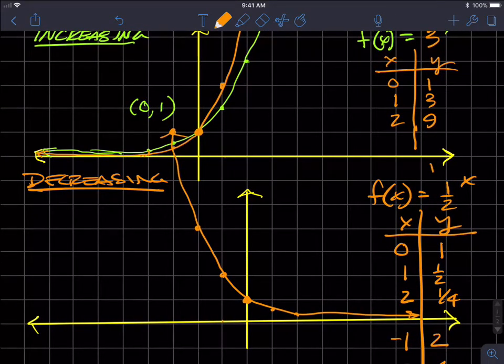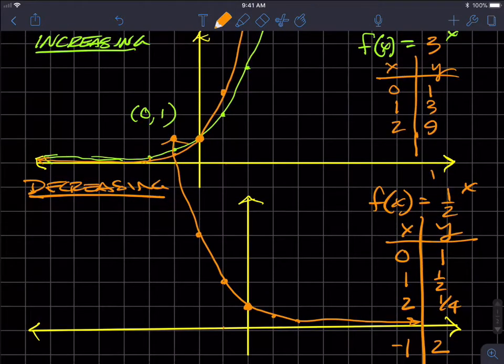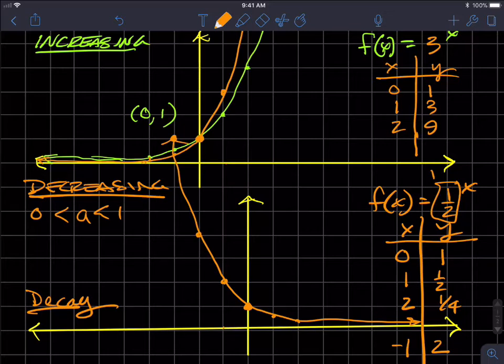So now how do we differentiate these two analytically? Because we don't want to plot these points all the time. So here's the gist. When A is less than 1, but greater than 0, notice how I have this one half here, then my function is decreasing. It looks like that. And we call this exponential decay. And an increasing situation happens when A is greater than 1. And that's exponential growth.